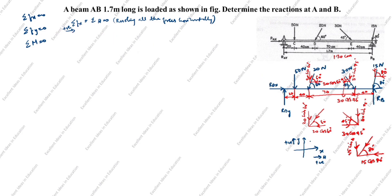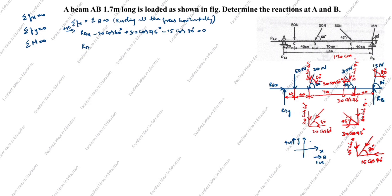The 30 cos 45° component goes in the positive direction, so it is plus 30 cos 45°. The 15 cos 80° component goes in the negative direction, so it is minus 15 cos 80°. Therefore: RAX − 20 cos 60° + 30 cos 45° − 15 cos 80° = 0, giving RAX − 10 + 21.12 − 2.6 = 0, so RAX = −8.61 Newton.